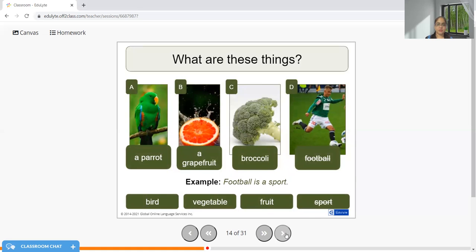A parrot is a bird. A grapefruit is a fruit. Broccoli is a vegetable, and football is a sport. Remember one thing: I am not putting 'a' before broccoli or football. The reason - before any names of sports like football, cricket, hockey, I don't have to use 'a'. And broccoli, I'm not depicting the quantity here, I'm not saying one broccoli or two broccolis. I'm just saying broccoli is a vegetable in a generic sense, so I am not putting 'a' before broccoli.